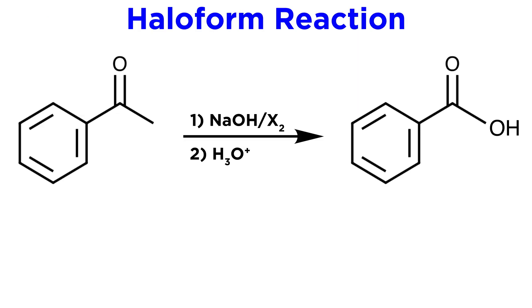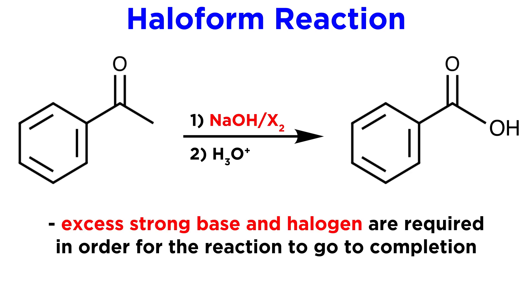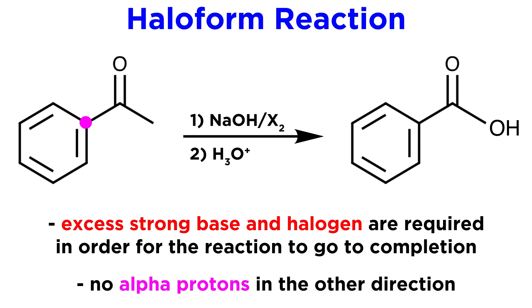But in general, the things to keep in mind are that this requires excess strong base and halogen so as to ensure reaction to completion, and that this reaction works best when there are no alpha protons on the other carbon so as to ensure deprotonation at the methyl carbon, which is why we utilized a phenyl group in this example. And with that, we have another transformation in our organic synthesis bag of tricks.